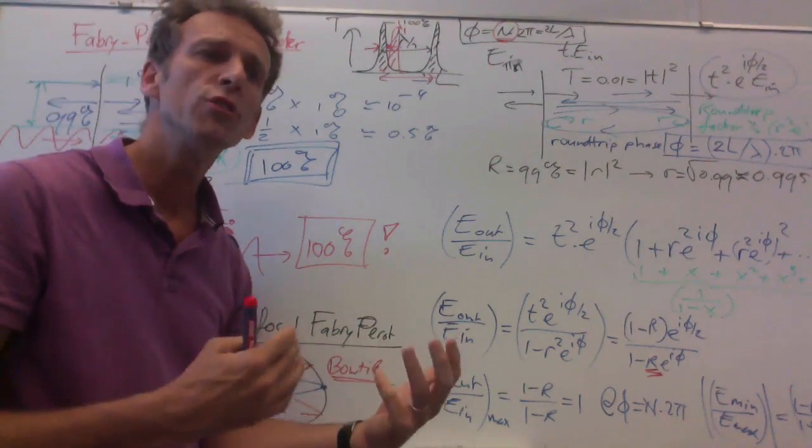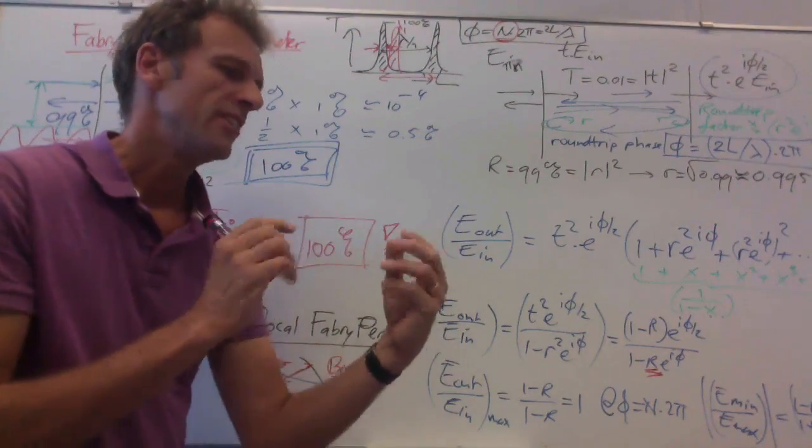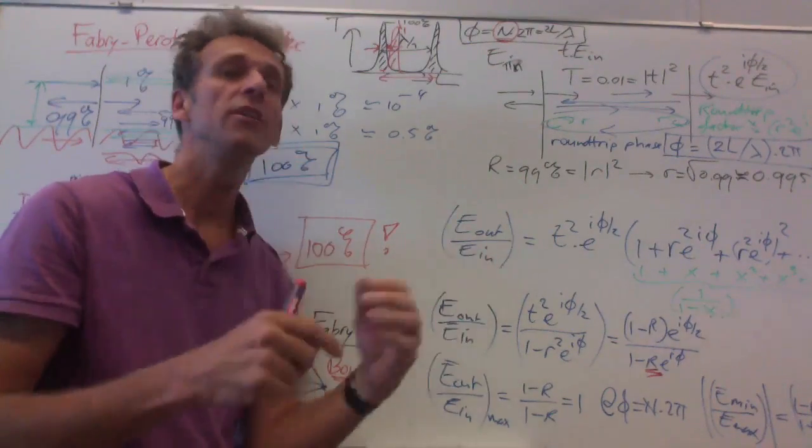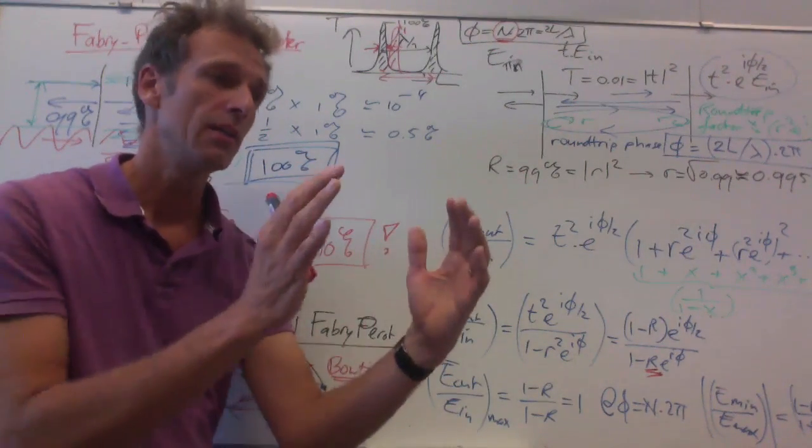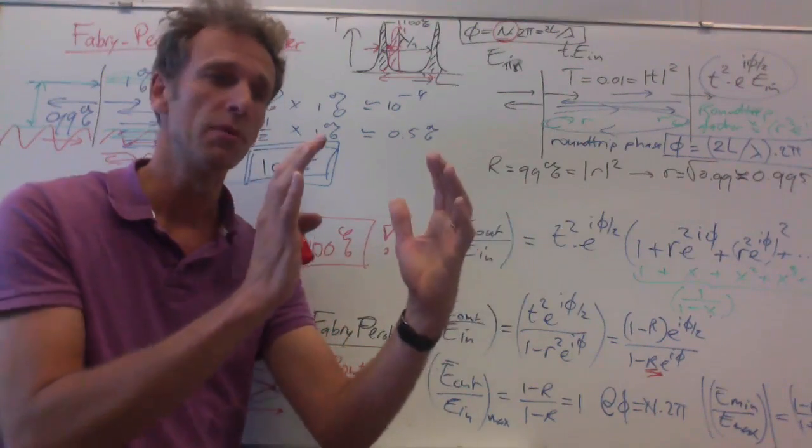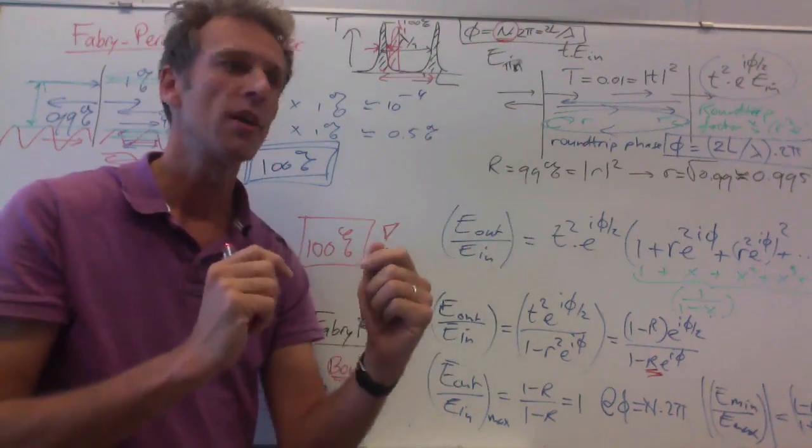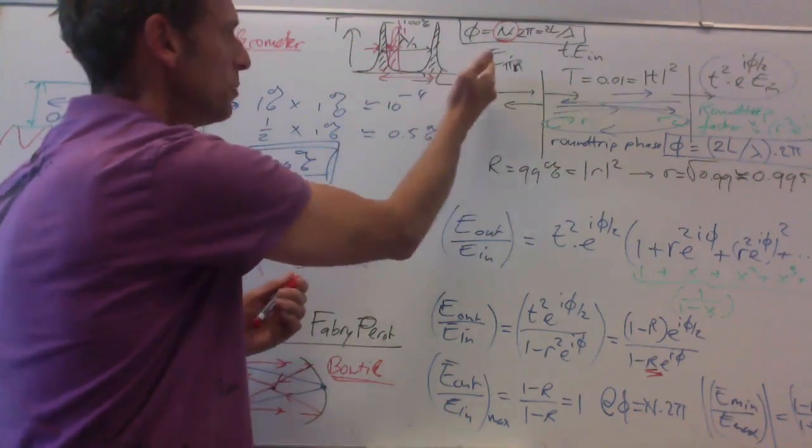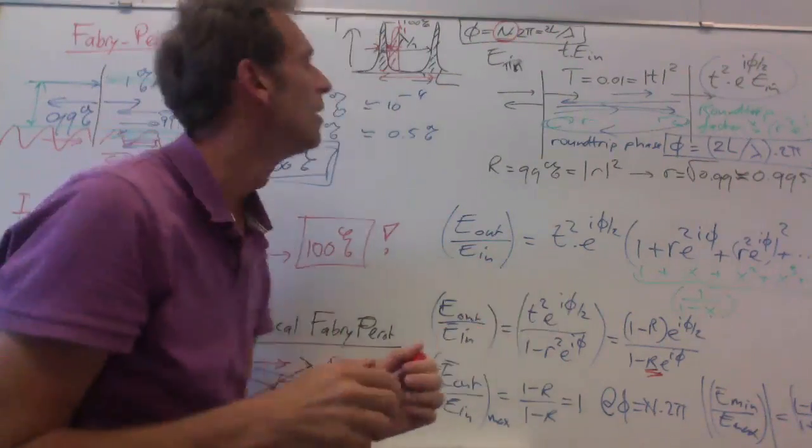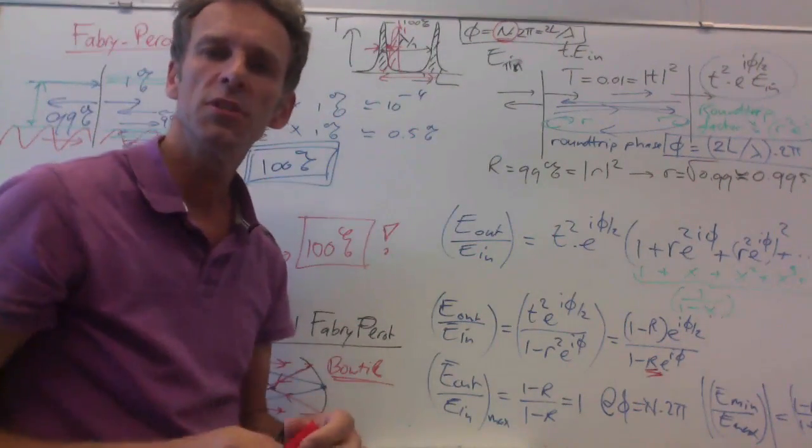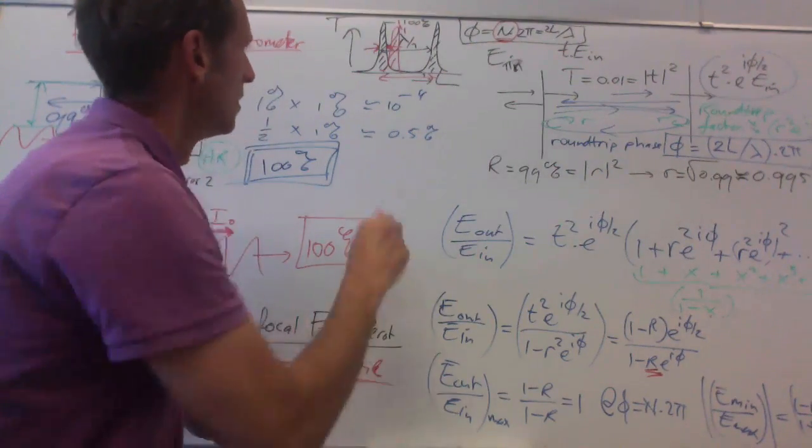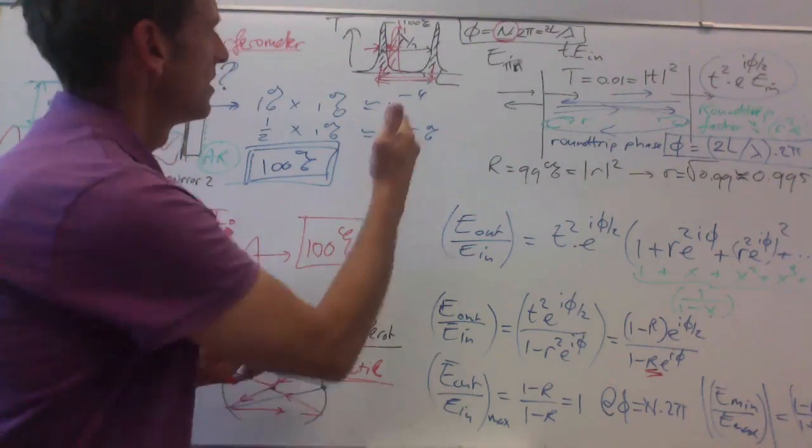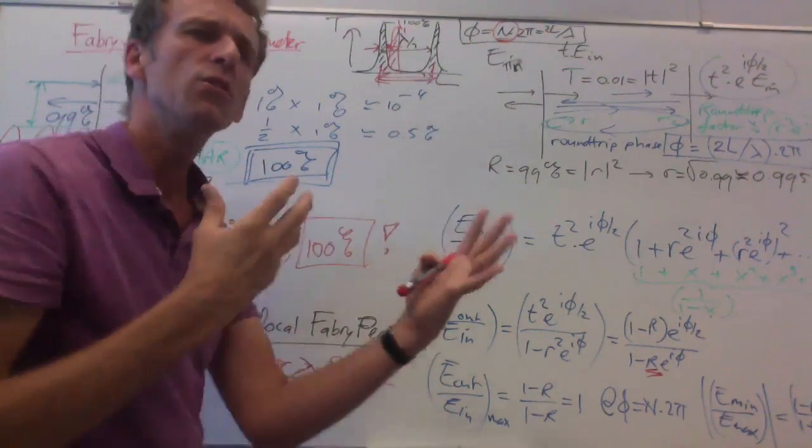So Fabry-Perots are often used to disentangle the optical spectrum of light. You have an optical source, you wonder what wavelengths are in that source, and for that you transmit the light through a Fabry-Perot, you wiggle the mirrors around, you look at the transmission as a function of the distance between the mirrors, and from the transmission spectrum, you can deduce the optical spectrum of the system, with the disadvantage that things might overlap.